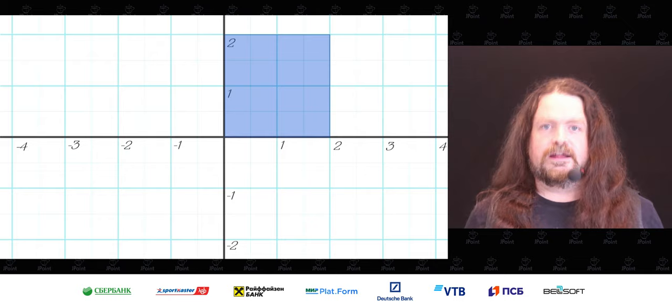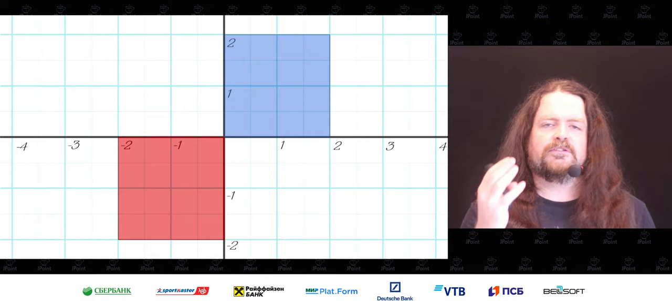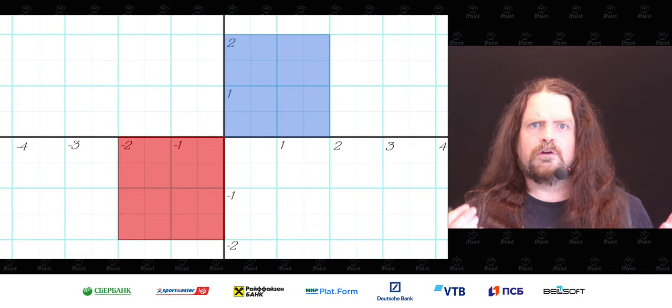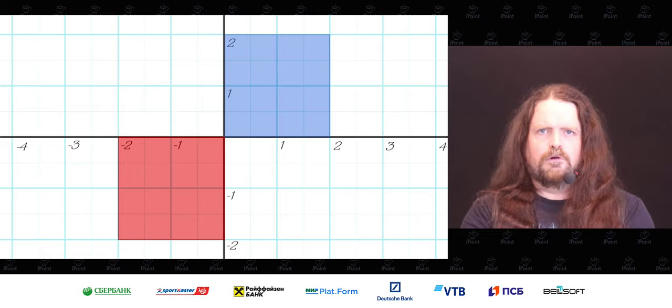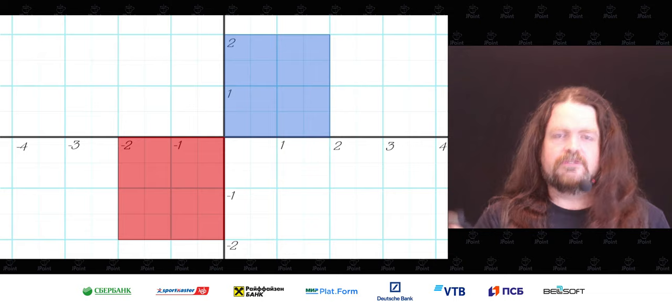I'm going to take a piece of graph paper and draw a square, two by two. The area of that square is four units. Now I'm going to draw another square, minus two by minus two. That area is also four. So if two times two is four, and minus two times minus two is also four, how do we get minus four? What number can we multiply by itself to get a negative result?